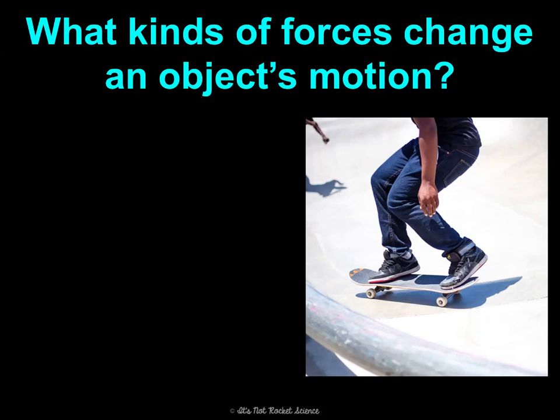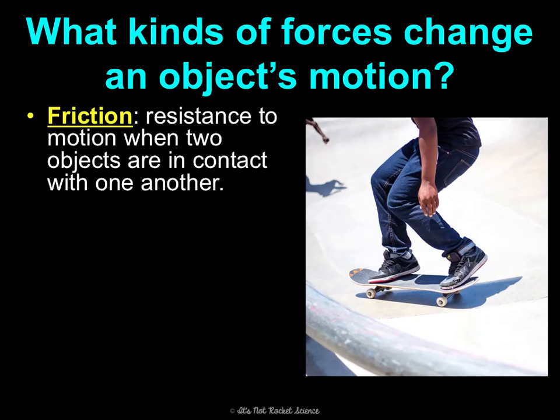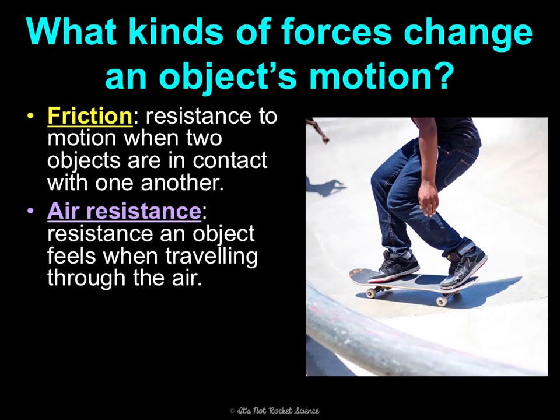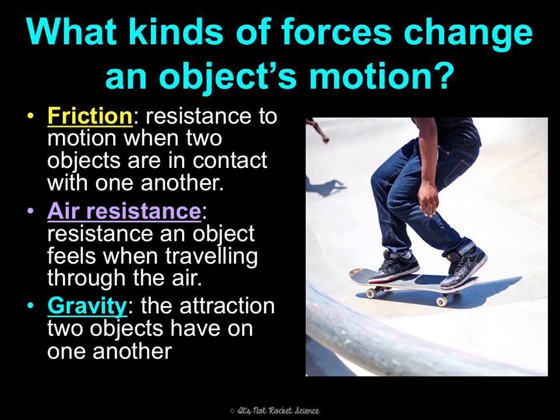What kinds of forces change an object's motion? One common force is friction — this is a resistance to motion when two objects are in contact with one another. Another common force is air resistance, which is the resistance an object feels when it's traveling through air. And then another common force is gravity, the attraction two objects have on one another. The force of gravity is what pulls us toward Earth when you jump in the air or fall.